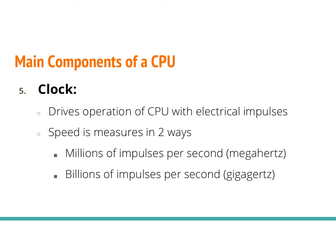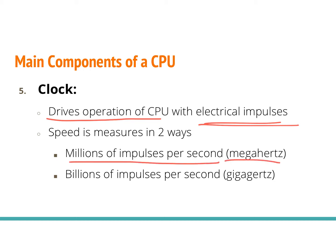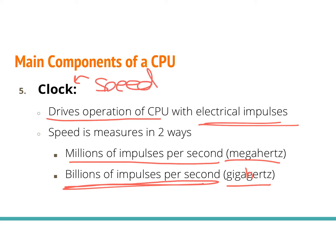The fifth and final component of the CPU is the clock. The clock on a computer drives the operation of the CPU — it's essentially the speed of the computer and the number of electrical impulses going through it. Speed is measured in megahertz, which is millions of impulses per second, or gigahertz, which is billions of impulses per second. The clock is essentially the speed at which your computer runs — how many instructions or impulses it can process per second.